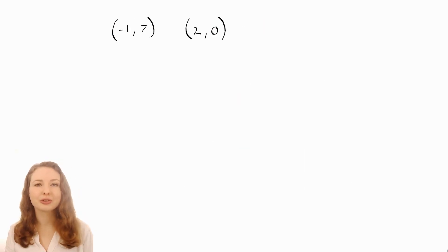I'll do another example. Let's find the slope of the line passing through the points (-1, 7) and (2, 0). You might like to pause this video and give it a go, then come back and check your answer.